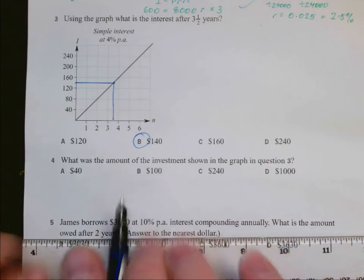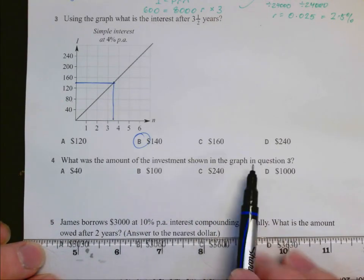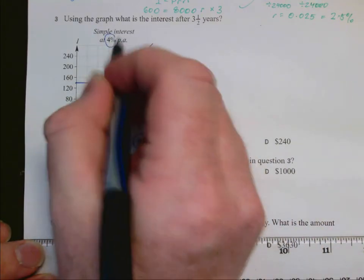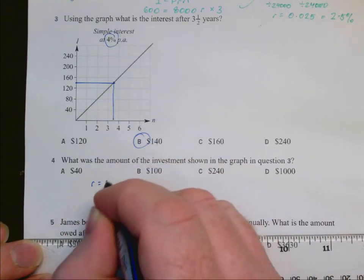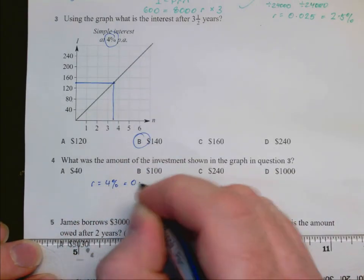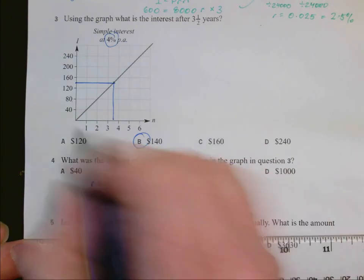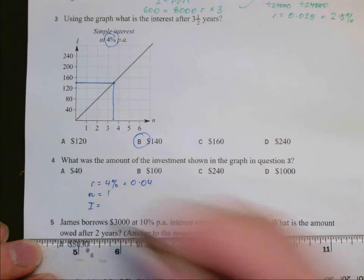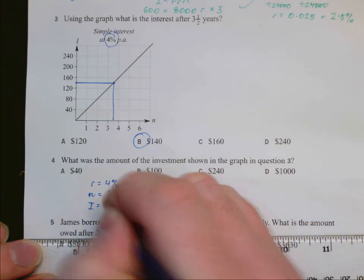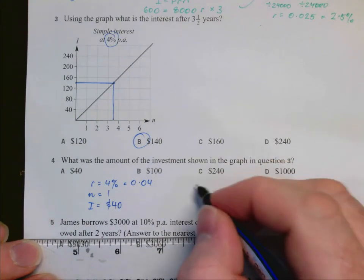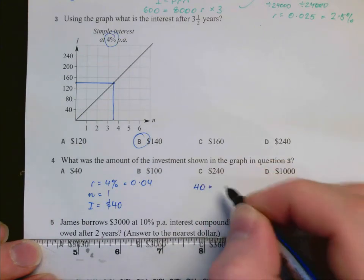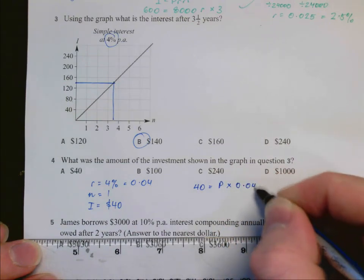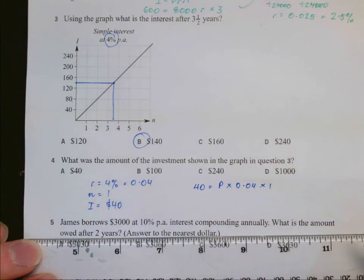In question 4, what was the amount of the investment shown in the graph in question 3? We're investing at a rate of 4%, which is 0.04. If we look at one time period, the interest amount is $40. We need to find what principal we would multiply by 4% for one year to get $40.